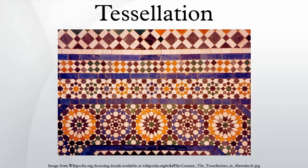Mathematically, tessellations can be extended to spaces other than the Euclidean plane. The Swiss geometer Ludwig Schläfli pioneered this by defining polyschemes, which mathematicians nowadays call polytopes. These are the analogues to polygons and polyhedra in spaces with more dimensions. He further defined the Schläfli symbol notation to make it easy to describe polytopes. For example, the Schläfli symbol for an equilateral triangle is {3}, while that for a square is {4}. The Schläfli notation makes it possible to describe tilings compactly. For example, a tiling of regular hexagons has three six-sided polygons at each vertex, so its Schläfli symbol is {6,3}.